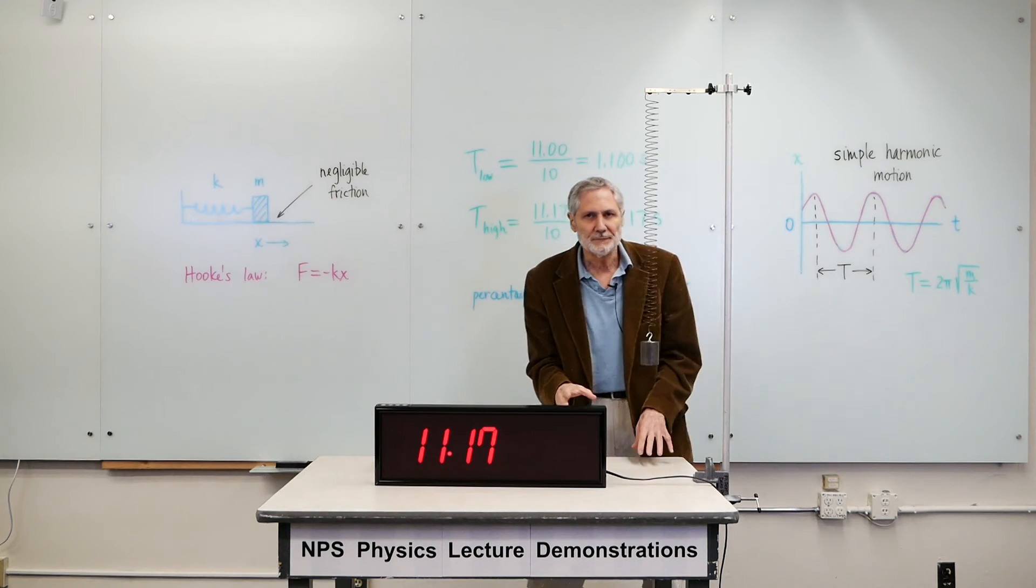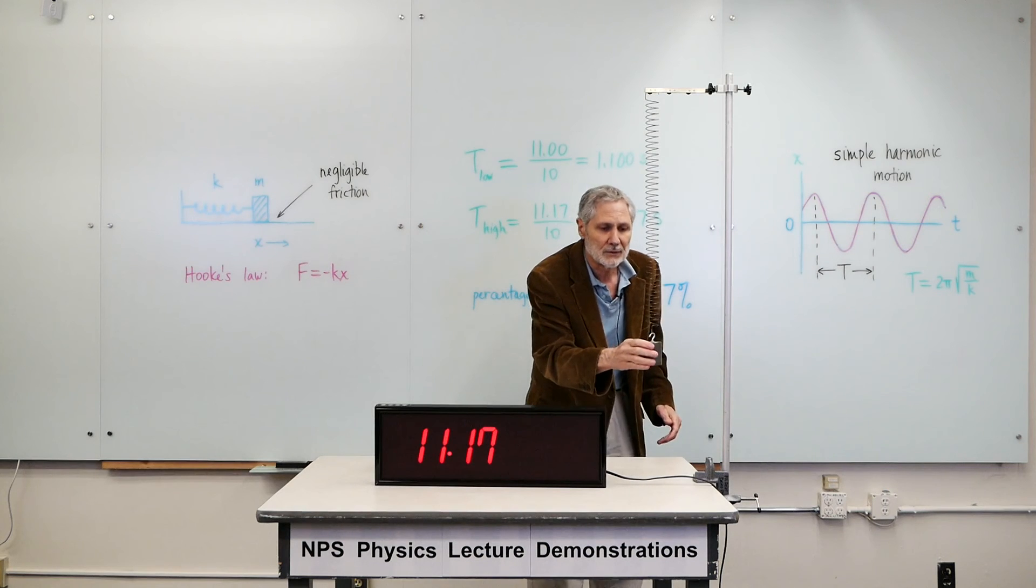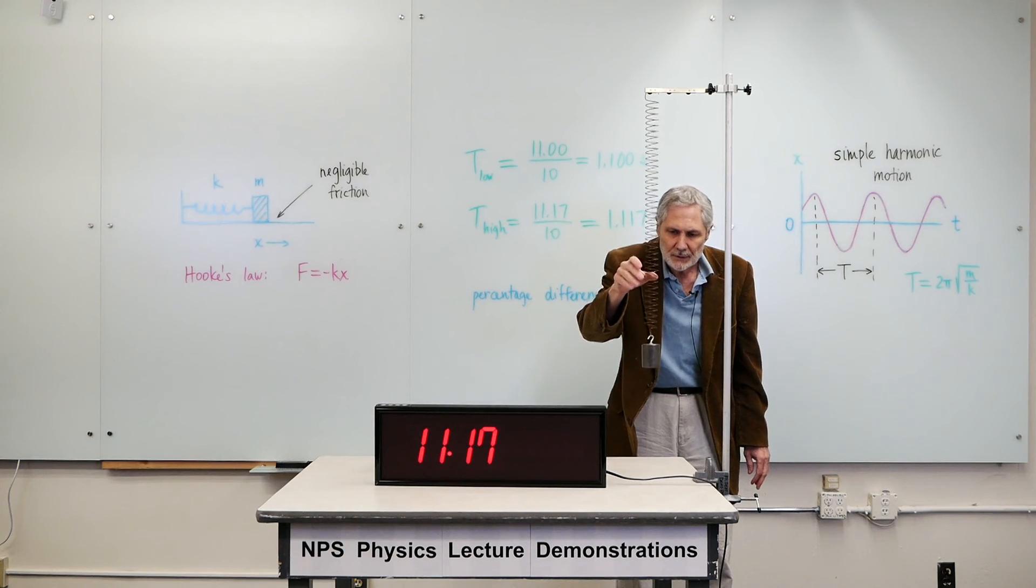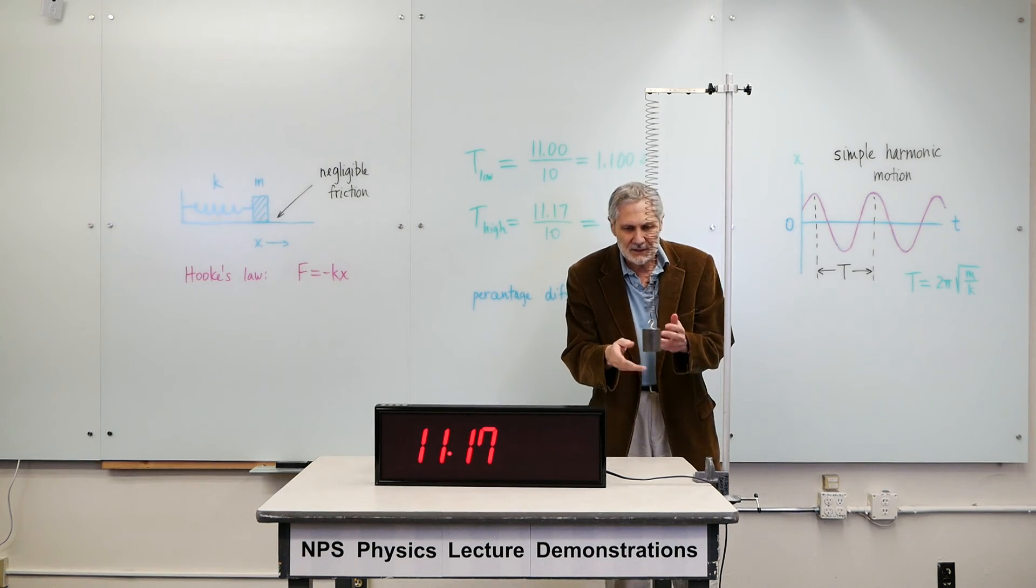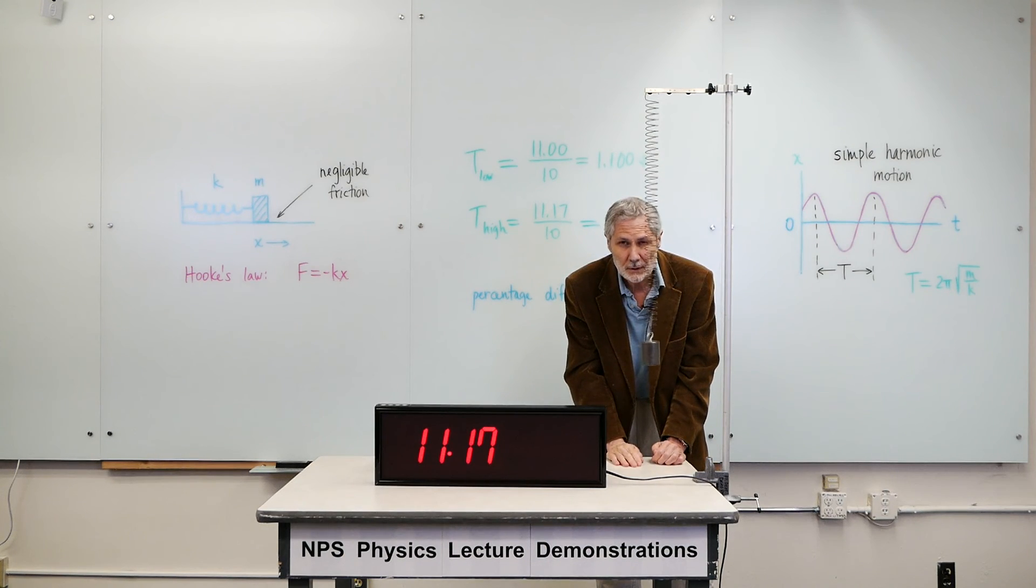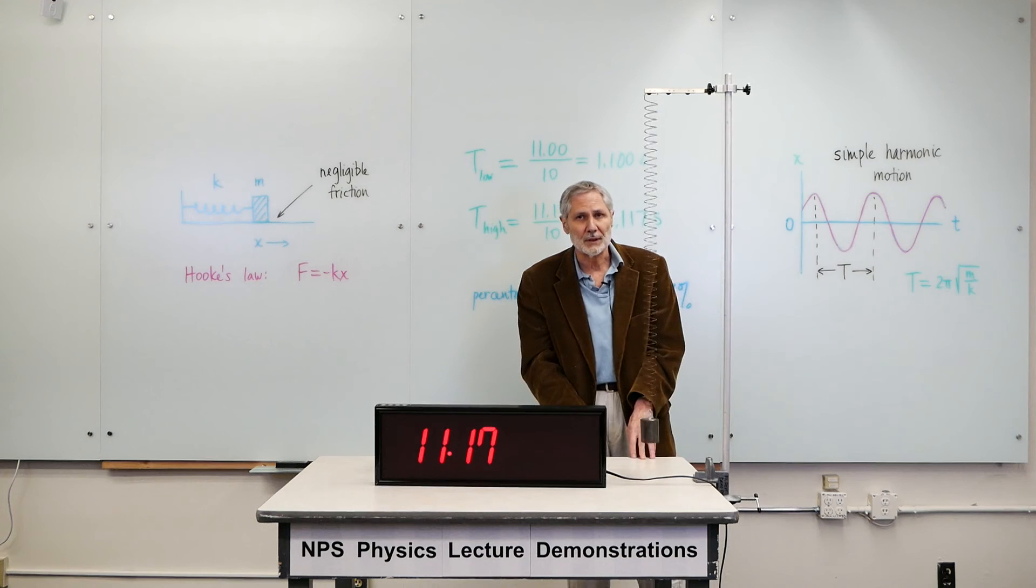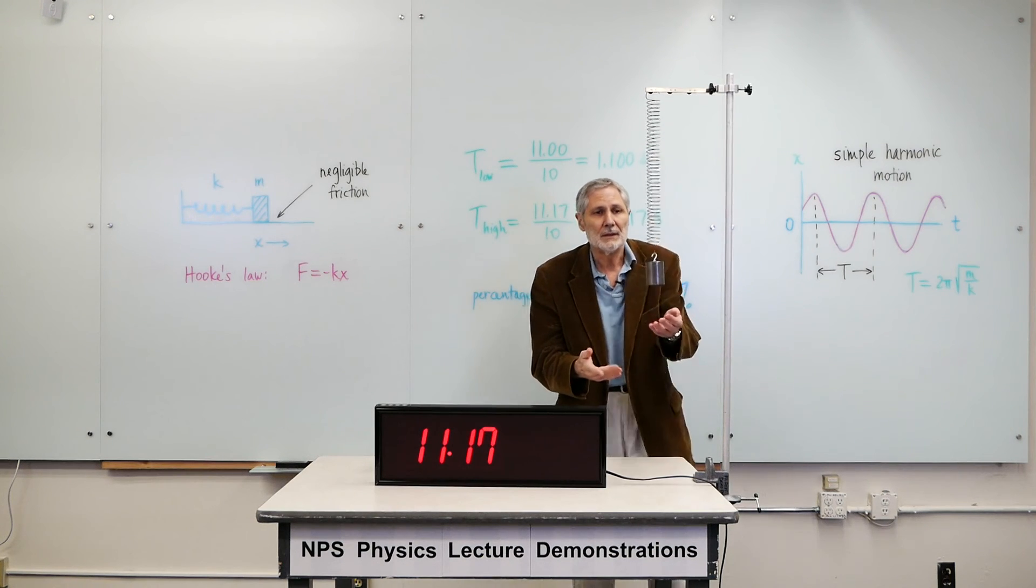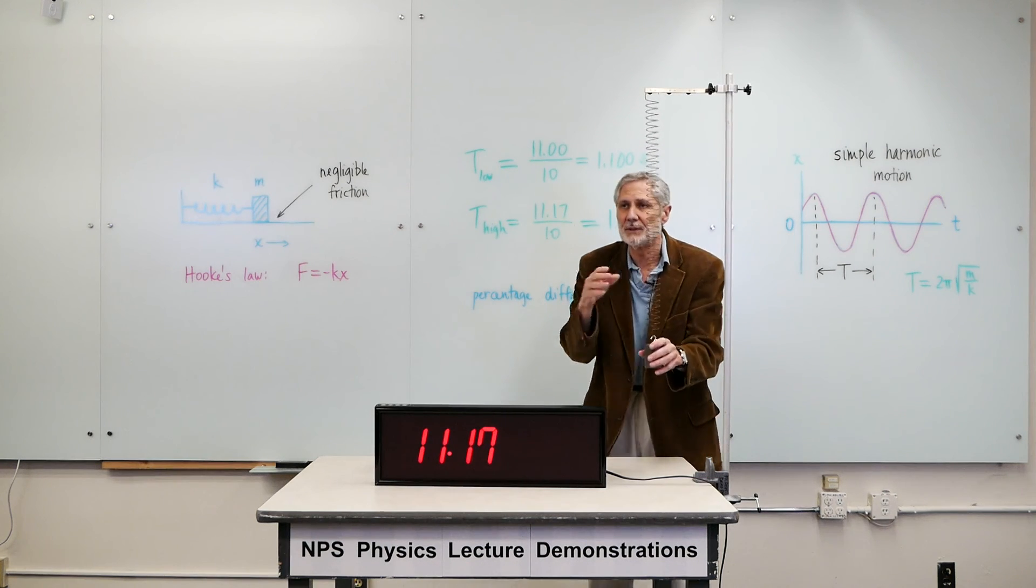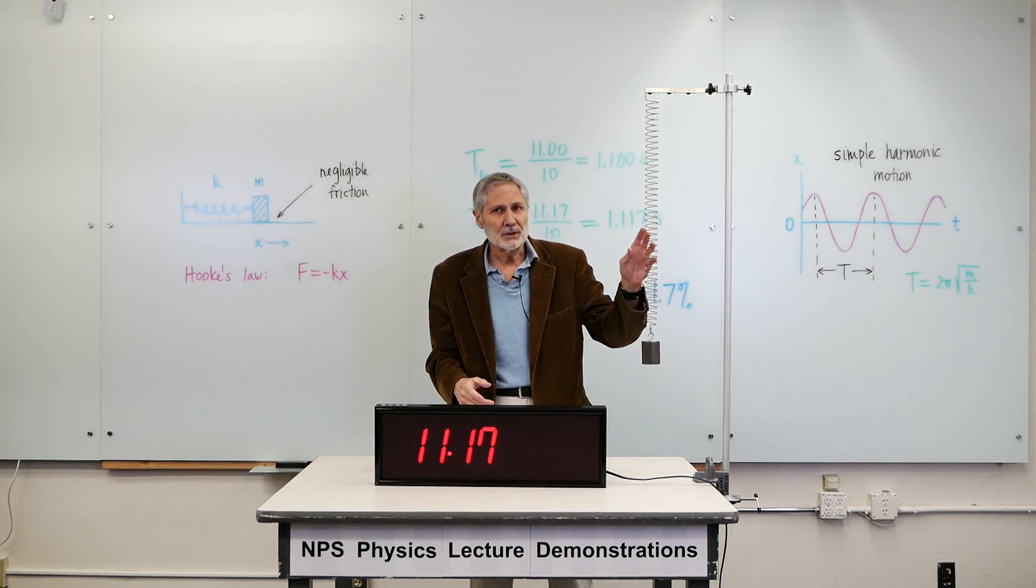Now, we shouldn't stop here. We should try to get a physical feel for how the period can be the same for all amplitudes here. How can that come about? Well, if you look at the small amplitudes here, you'll notice that the velocity is relatively low, right? But the distance traveled is also low. It's also small. Right? Here, the velocity is bigger, much bigger. But the distance is much bigger. So it's reasonable, it's plausible that those two effects could compensate each other. And we get the same time here as we get here. And that's indeed what the theory shows us, the mathematical theory.